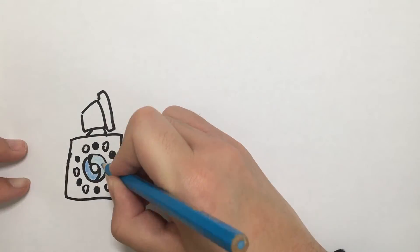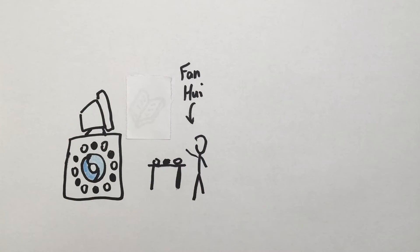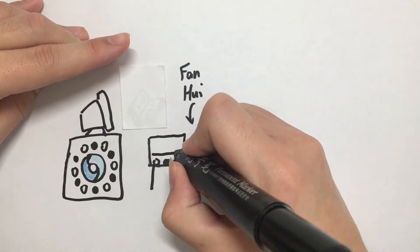AlphaGo first trained itself by imitating human masters from historical games. Then switched to playing with itself when it got better. When playing with the European Go champion Fan Hui in October 2015, it had already gotten very good.